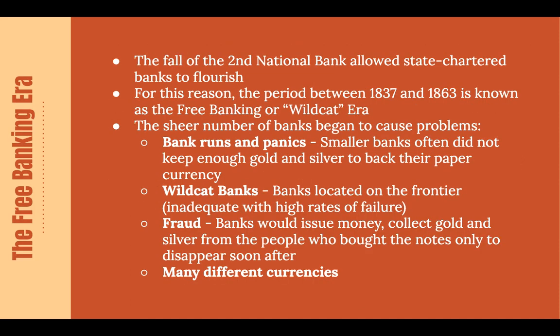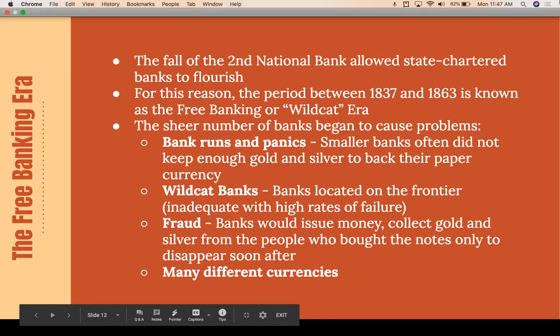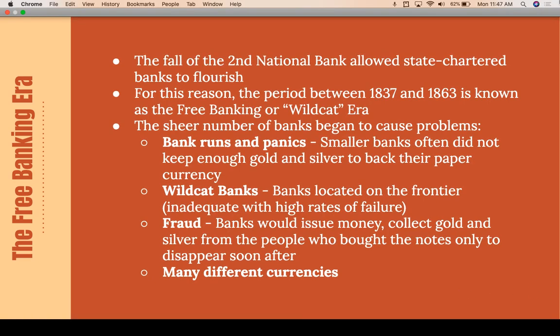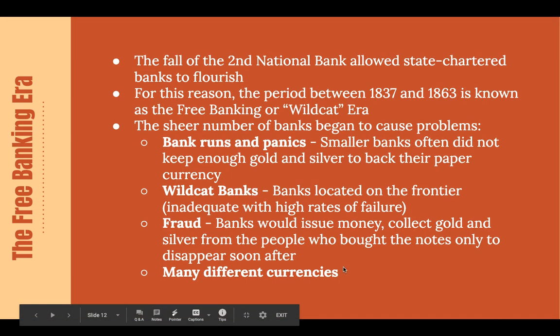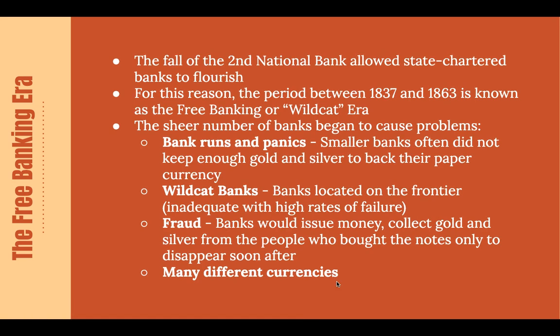The fall of the Second National Bank allowed state-chartered banks to flourish. This period between 1837 and 1863 is typically known as the free banking or wildcat era. There were scams associated with these smaller banks, and many banks defaulted because they didn't have the proper gold and silver backing to accommodate all the people trying to bank with them. There were also many different currencies, so it was not a uniform system — causing a lot of different issues in the early stages of the country.